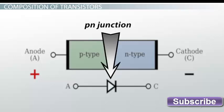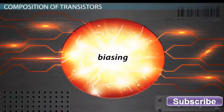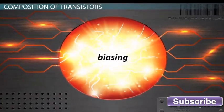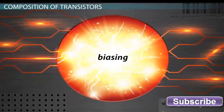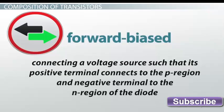Biasing: process of adding an outside voltage source to make the diode behave a certain way. Forward biased: connecting a voltage source such that its positive terminal connects to the P region and negative terminal to the N region of the diode.